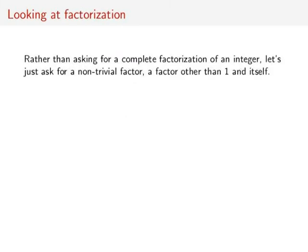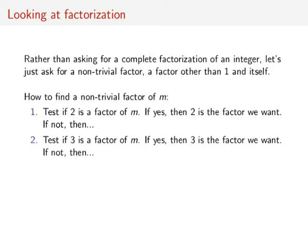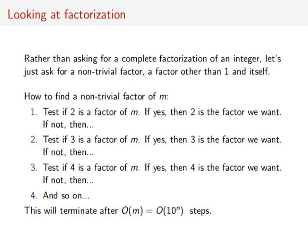Now let's take a look at factorization. Rather than asking for the complete factorization of an integer, let's just ask for a single non-trivial factor — that is, a factor other than 1 and itself. How do we go about finding such a non-trivial factor? Well, first we can test if 2 is a factor of m. If yes, then 2 is the non-trivial factor we want. If not, then let's test if 3 is a factor of m. If yes, then 3 is the factor we want. If not, we test if 4 is a factor of m, and so on. If there is a non-trivial factor of m, we should be able to find it within big O of m steps, which is big O of 10 to the n.